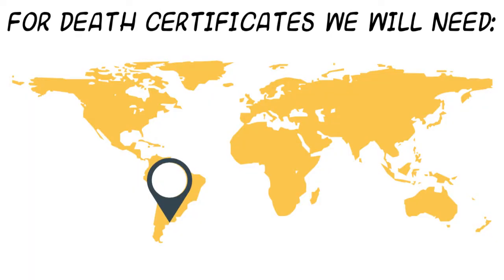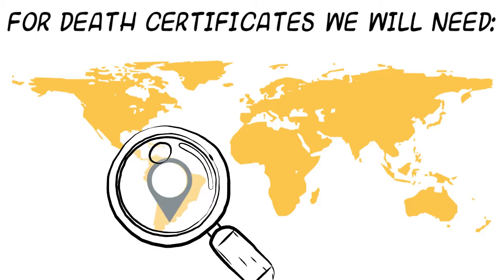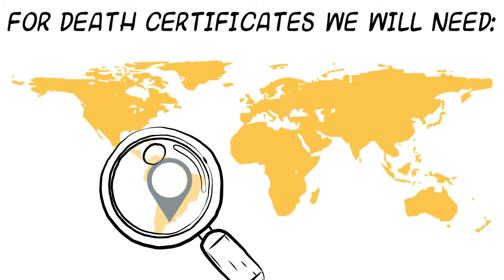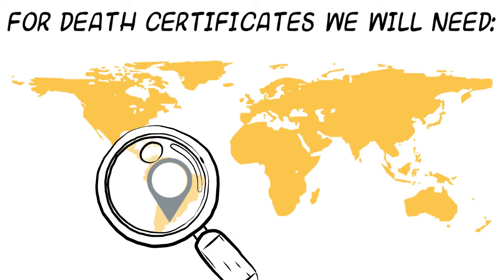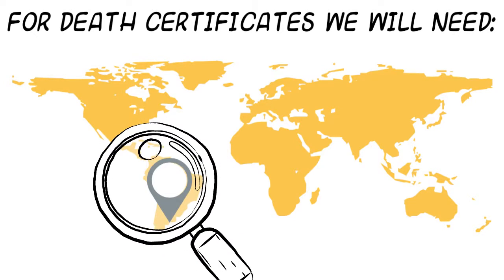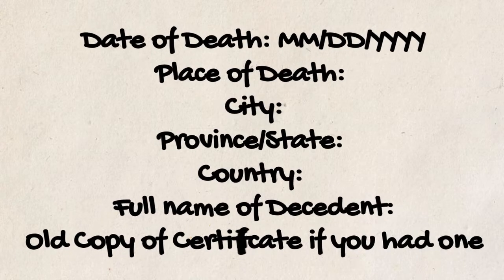For death certificates, we will need: date of death — month, day, year; place of death — city, province, or state, country; full name of the decedent; and an old copy of the certificate if you had one.